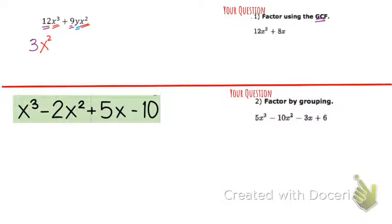So both of these terms I can divide by 3x squared. So that's what goes on the outside of the parentheses, and what's on the inside of the parentheses is what is left when you divide it by 3x squared. So if I look at the first one here, if I divide 12 by 3, I get 4. If I divide x to the third by x squared, there's 1x left.